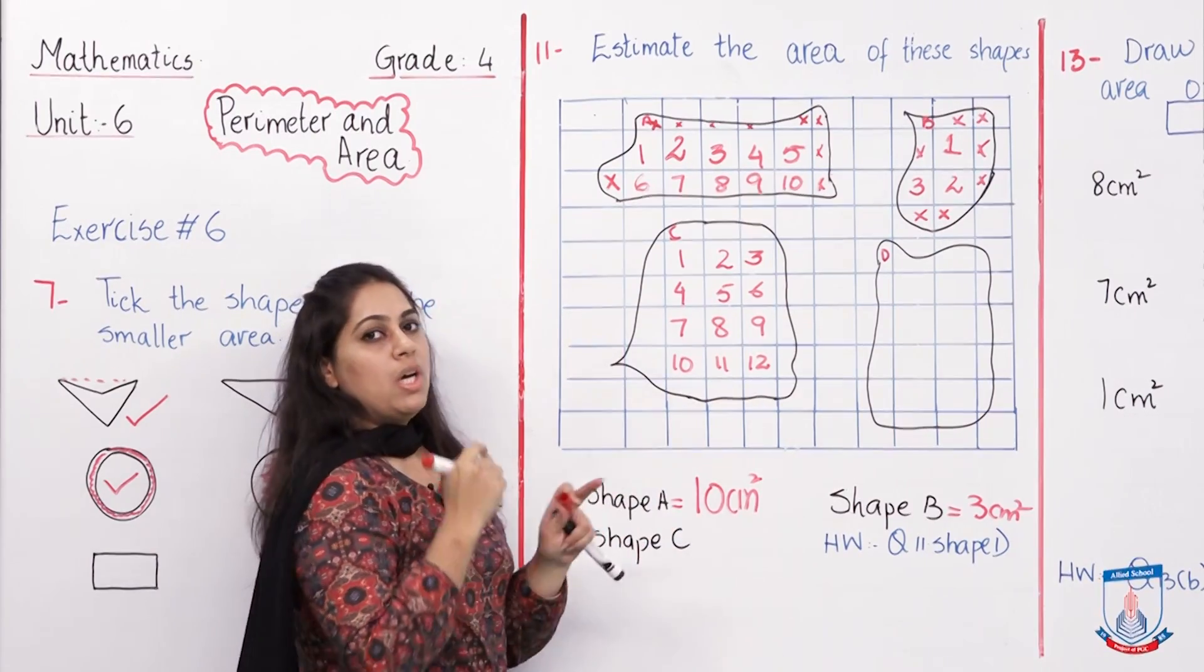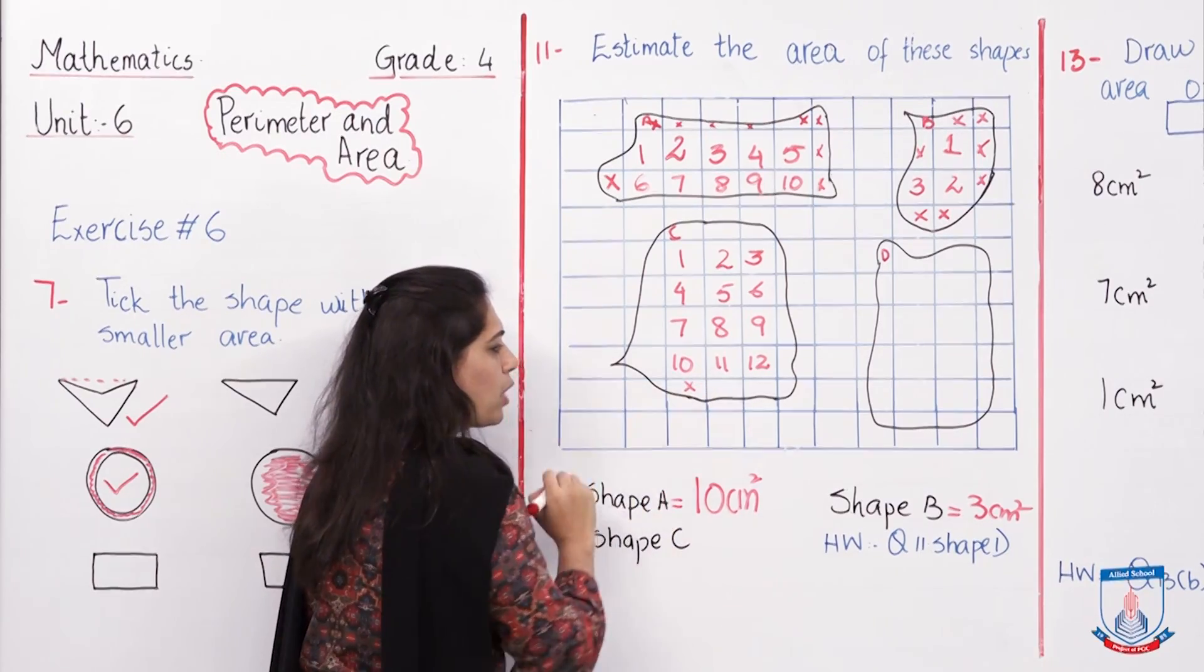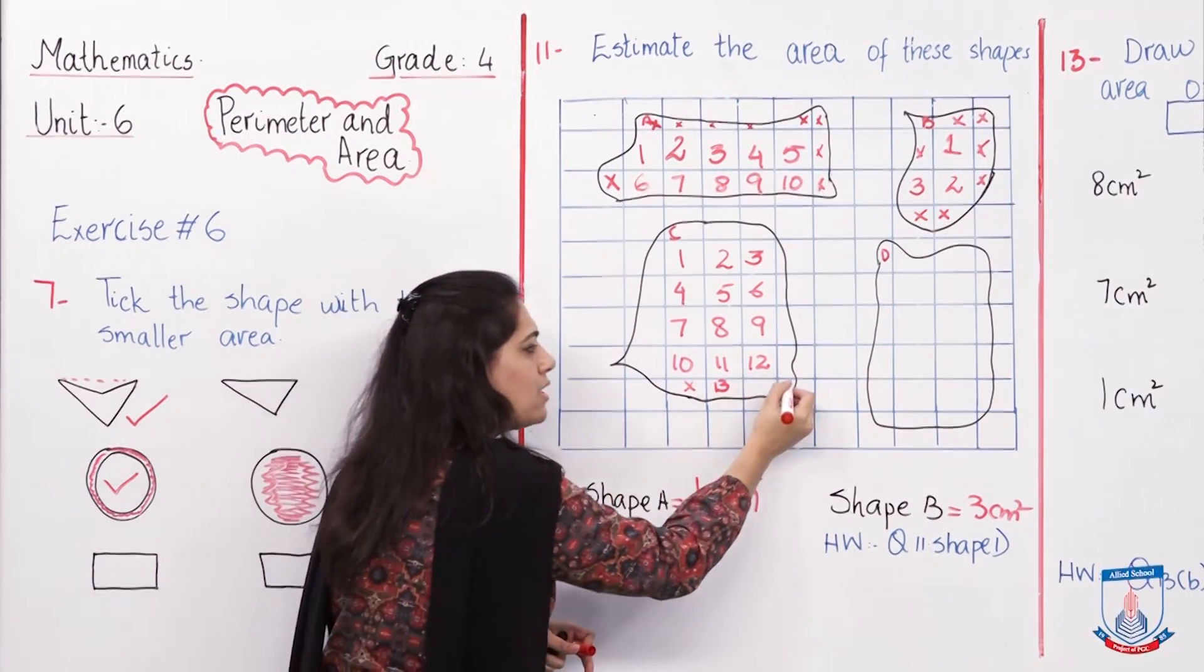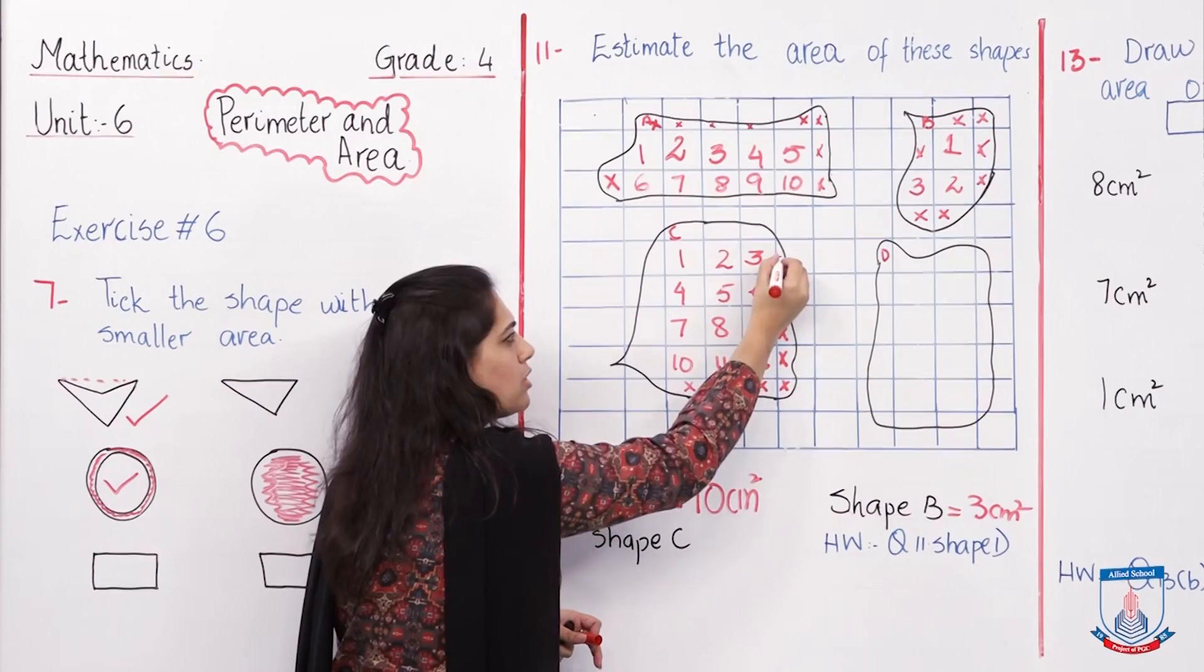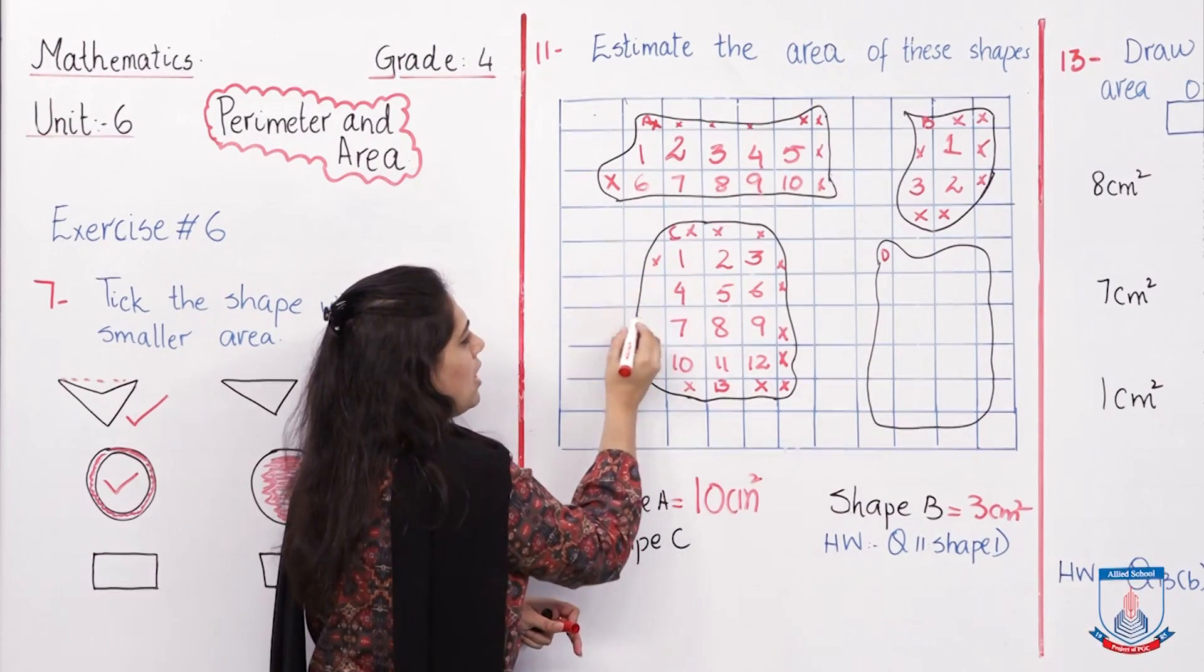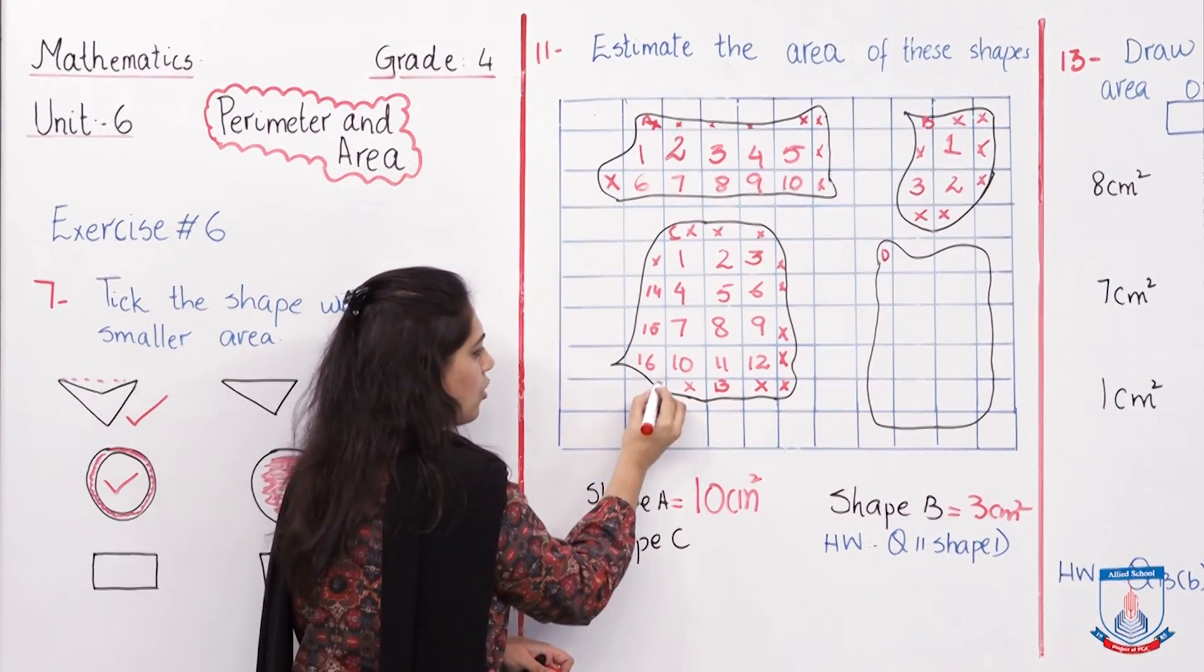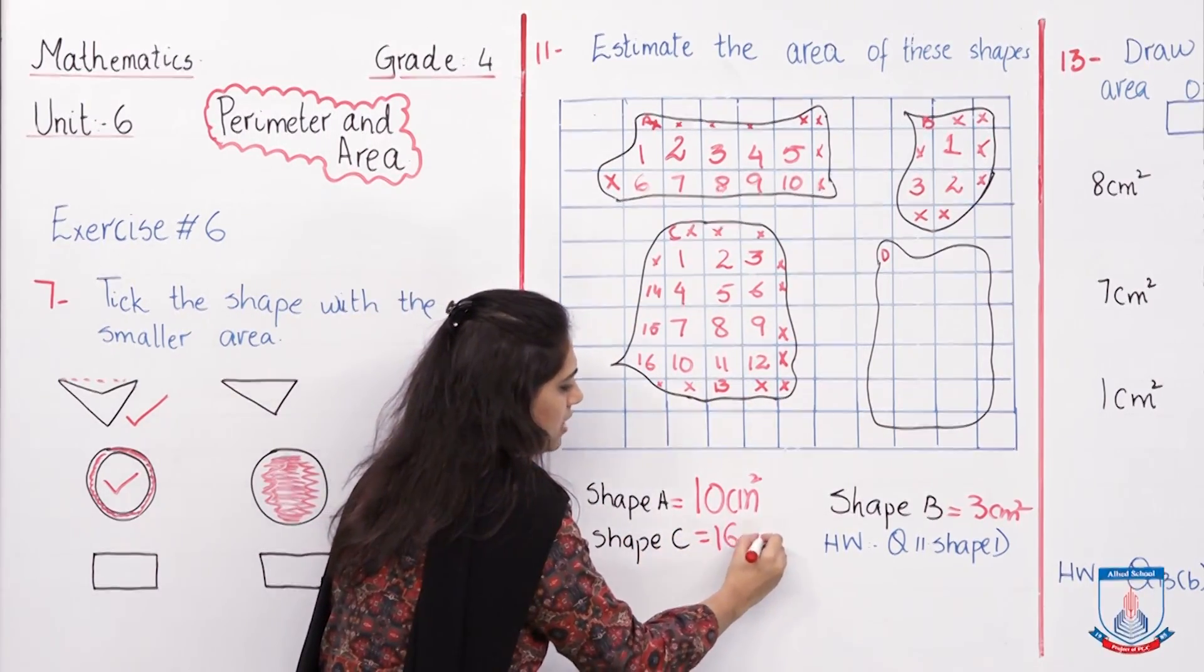I am going to mark it cross because this half is not covered. This half is not covered, I am not going to mark it. This one is 13. This half is not covered. This is 14, 15, and this is 16, and this is cross. So what is the area of this shape? It is 16 centimeter square.